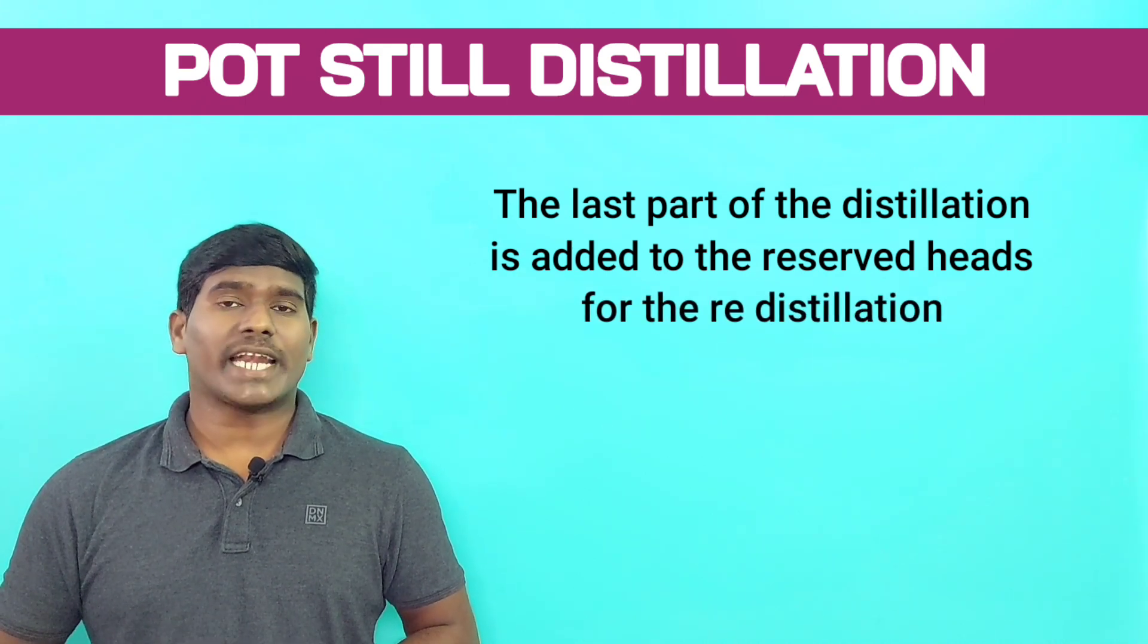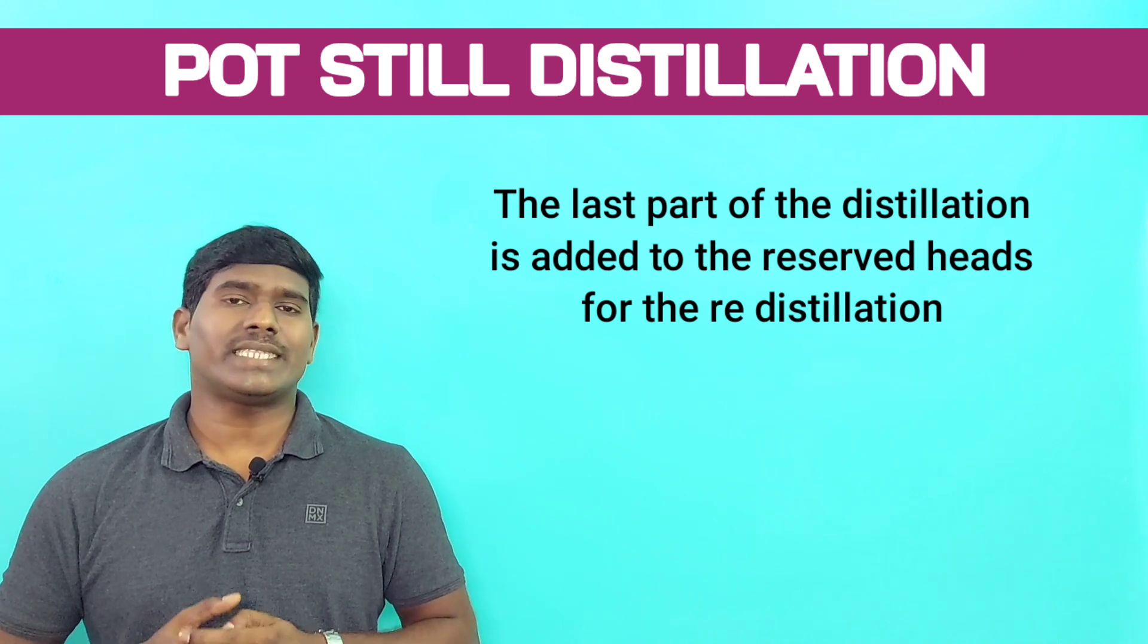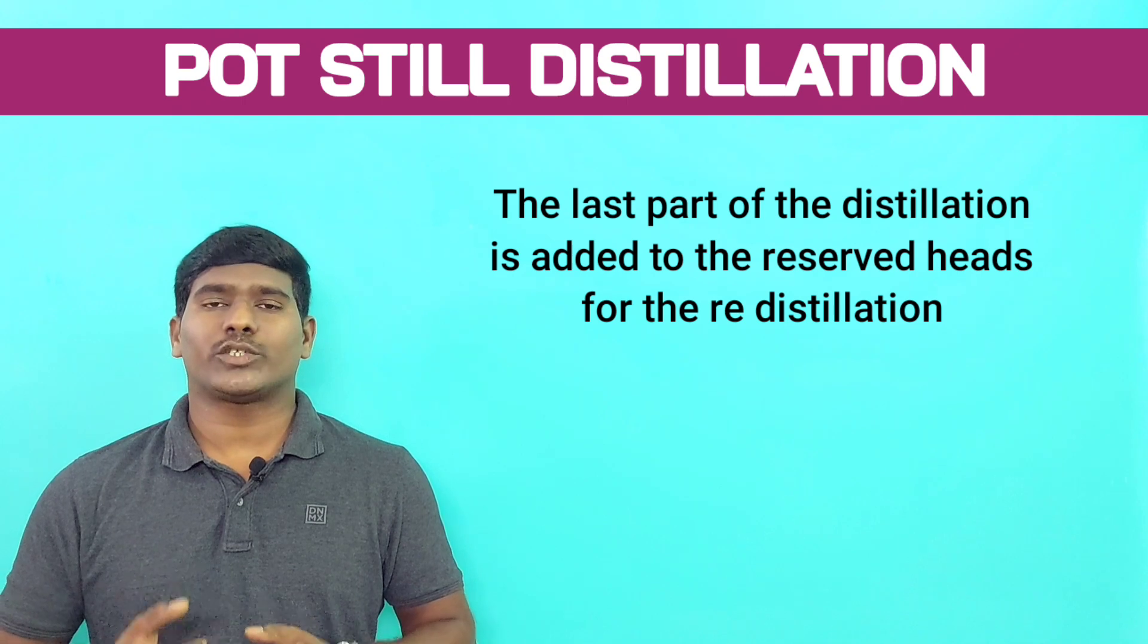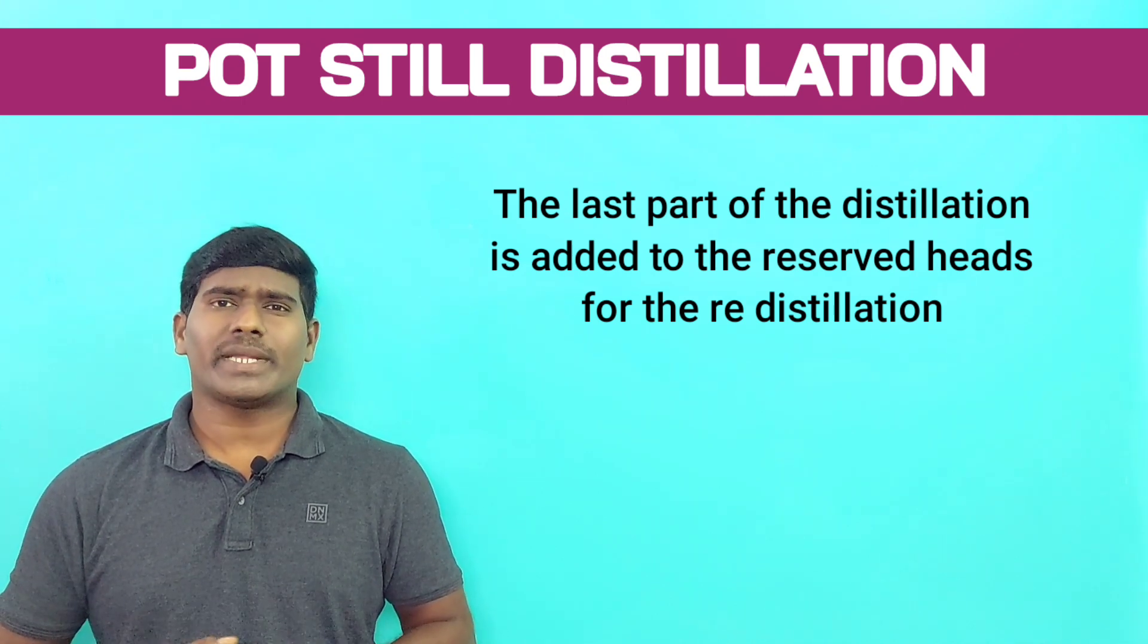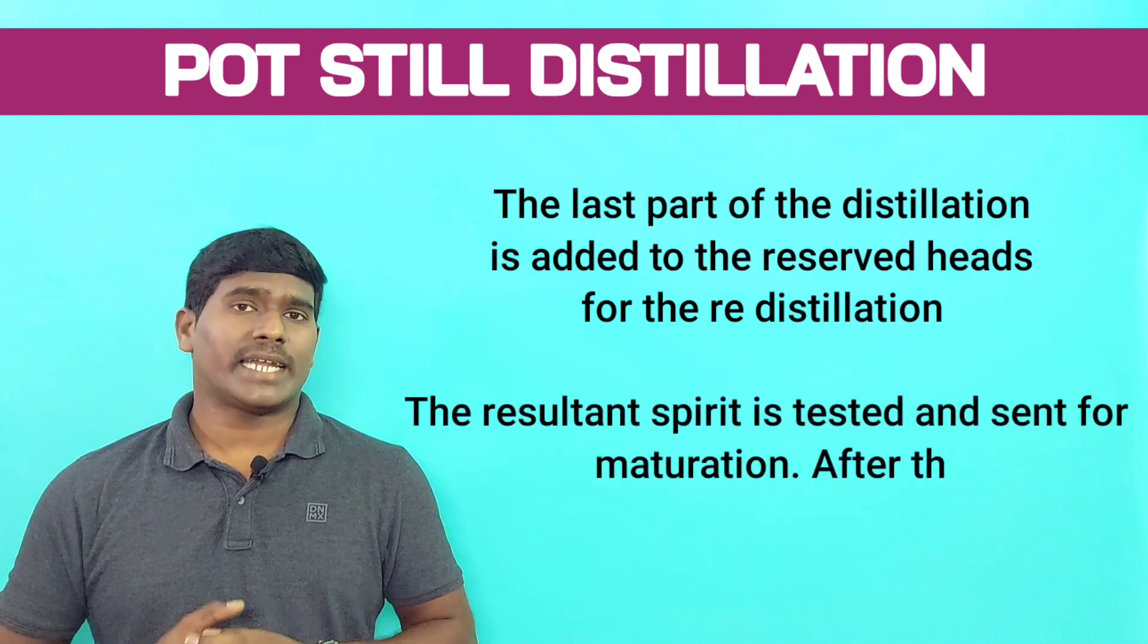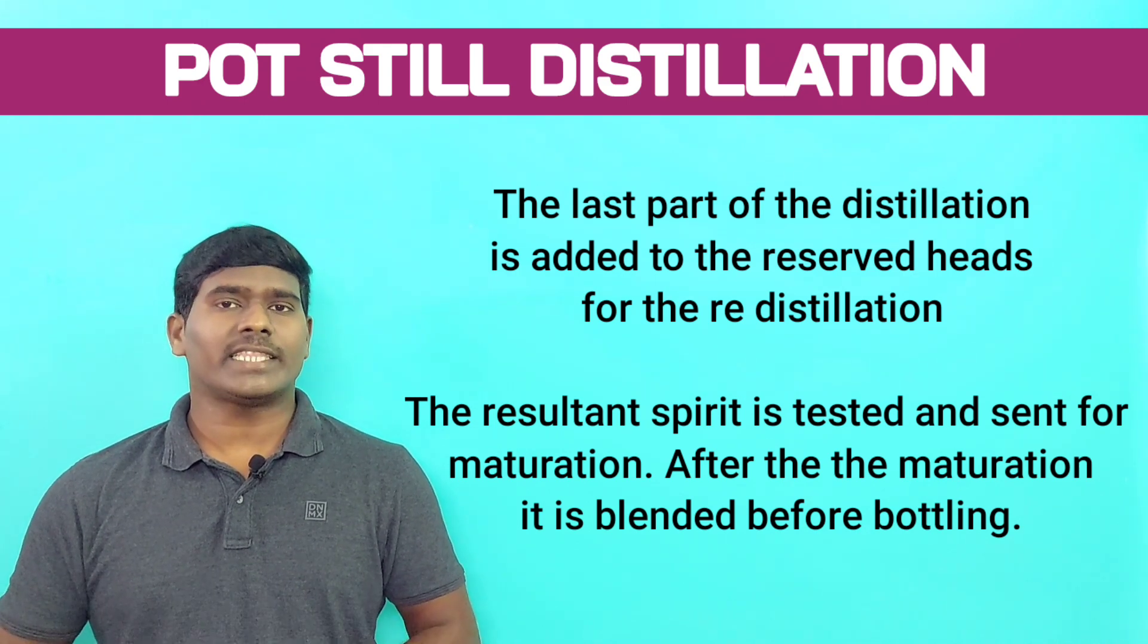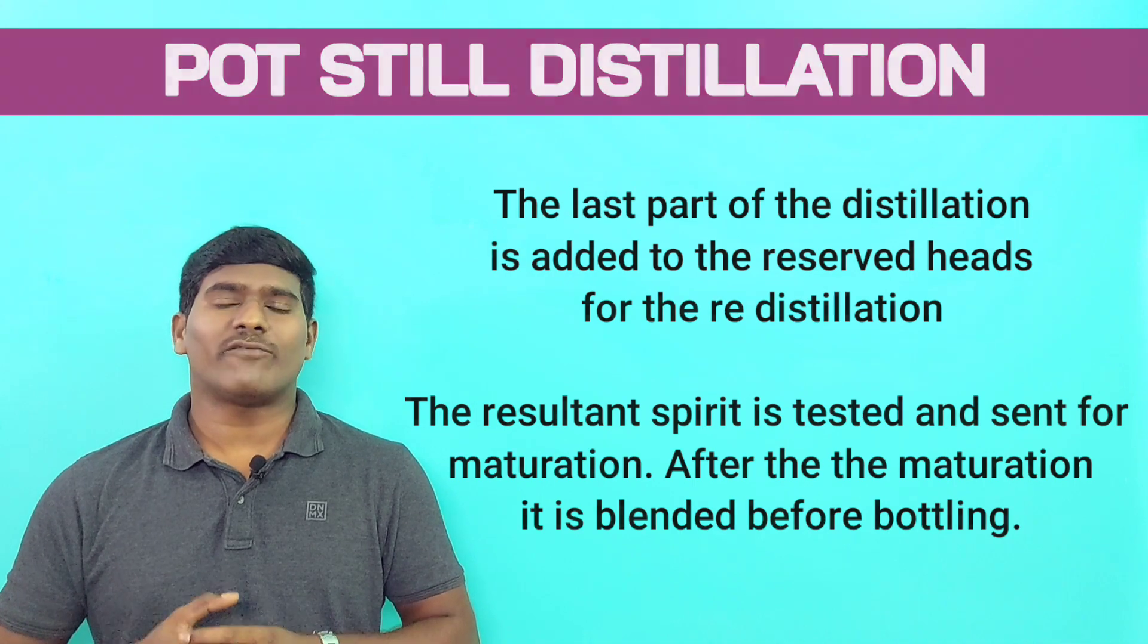The new spirit may be reduced in strength to 63% alcohol by the addition of deionized water. The resultant spirit now requires testing, maturing, blending and the reduction of strength before being bottled for sale.